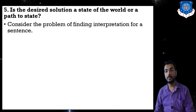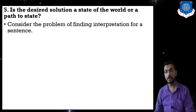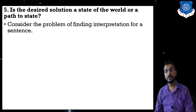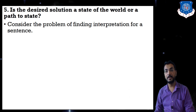This will vary from problem to problem. Consider the problem of finding the interpretation of a sentence. In some cases, once we apply some operator it will lead to the final solution — the final goal state. In other cases, applying an operator or rule will just lead us to an intermediate state.